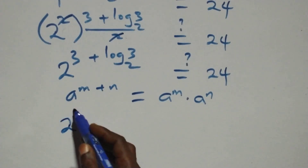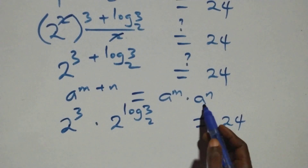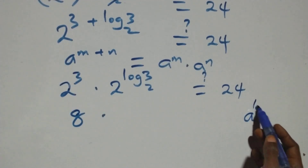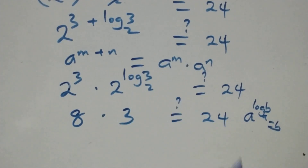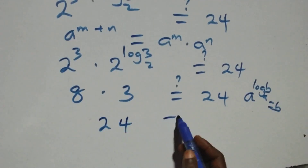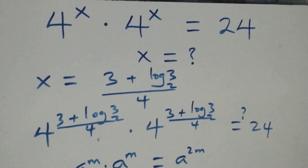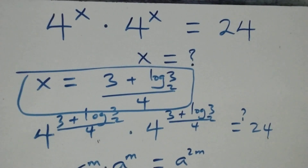We have 2 raised to power 3 times 2 raised to power log₂3, which equals 8 times 3, giving us 24, which equals 24. The left-hand side equals the right-hand side, and therefore we conclude that x equals (3 plus log₂3) over 4 satisfies the given problem. Thank you for watching — don't forget to subscribe for more videos, turn on notifications, share this video, and leave a thumbs up with your comments. See you in the next video, bye for now.